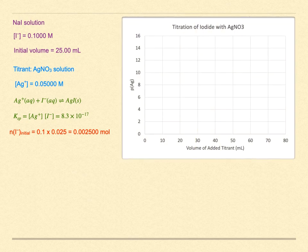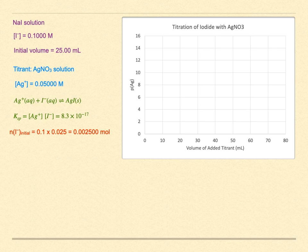We will follow the progress of the titration on a graph with added titrant on the x-axis and PAg — the negative base-10 log of the silver ion concentration — on the y-axis. At the beginning, there is no silver ion present, so PAg is undefined. We can think of it as positive infinity, but it really is just undefined. This point is never on the graph, but after the tiniest amount of added titrant, the PAg value is defined.